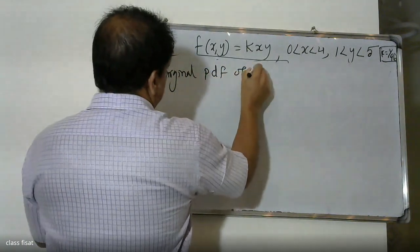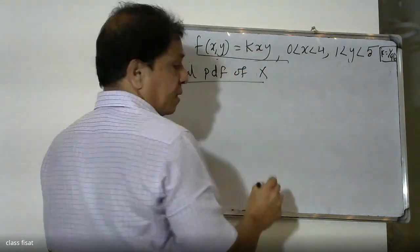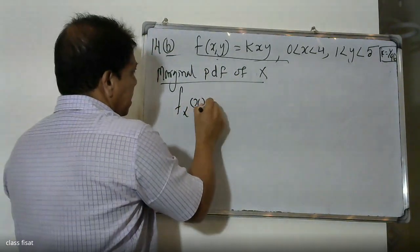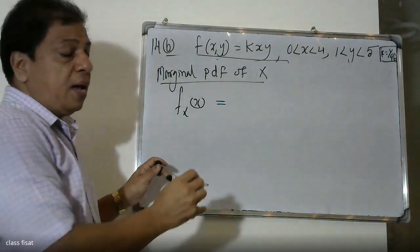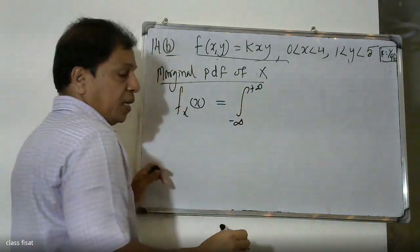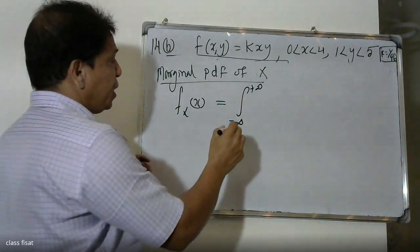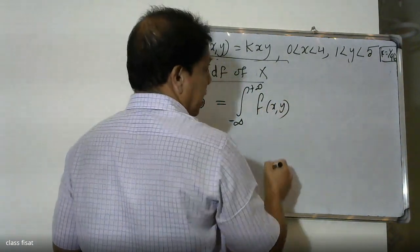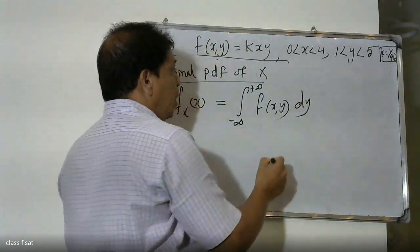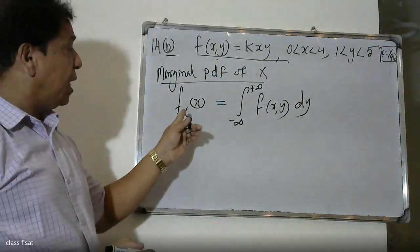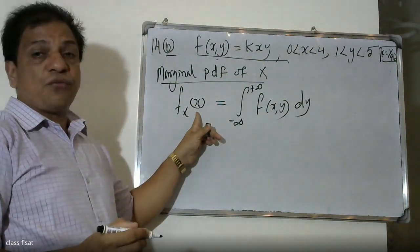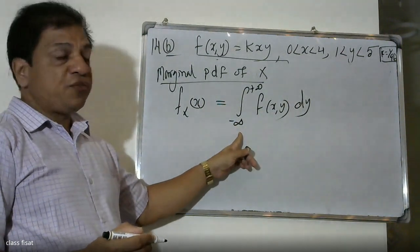Now we find the marginal PDF of X. The marginal PDF fx(x) is obtained by integrating f(x,y) over all y, from minus infinity to plus infinity.